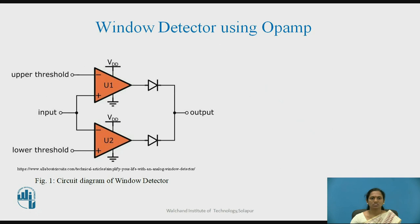Figure 1 shows the circuit diagram for the window detector using OPAMP. OPAMP U1 and U2 are used to detect the upper threshold and lower threshold respectively, where the input signal is applied to opposite terminals — that is the non-inverting terminal of OPAMP 1 and the inverting terminal of OPAMP 2. Two diodes are used to combine the voltages and provide the output at the window detector.